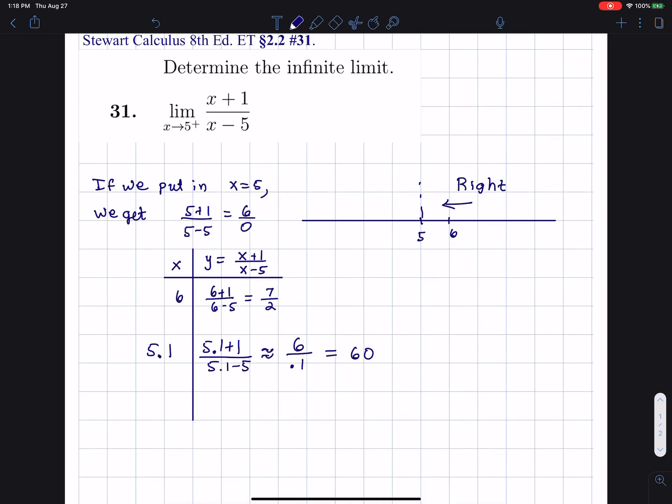If I put in 5.01 for x, I'm going to get what? If I put that in there, 5.01 plus 1 is around 6, divided by 0.01, that's around 600.